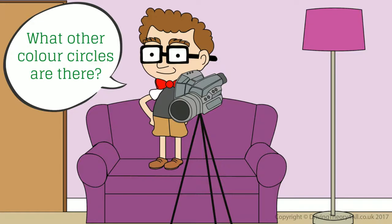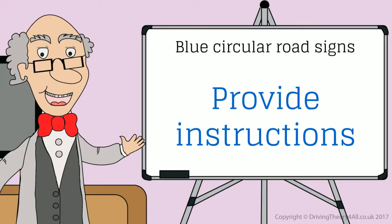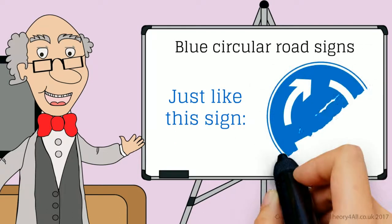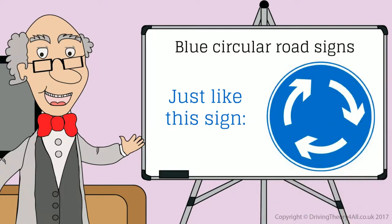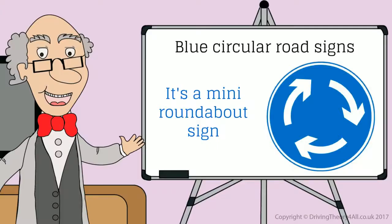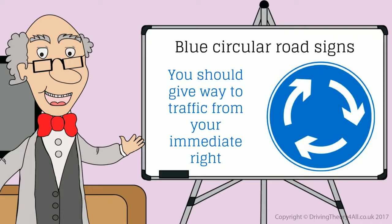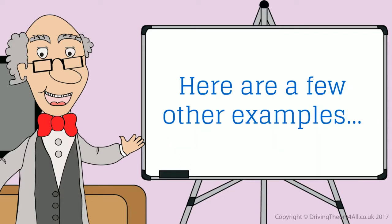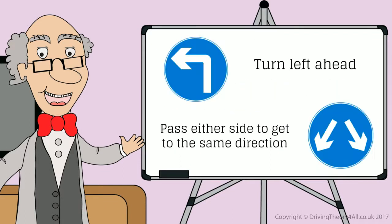What other colour circles are there? Blue circular road signs provide instructions, just like this sign. What does that sign mean? It's a mini roundabout sign — you should give way to traffic from your immediate right. Here are a few other examples: turn left ahead, pass either side to get to the same direction.